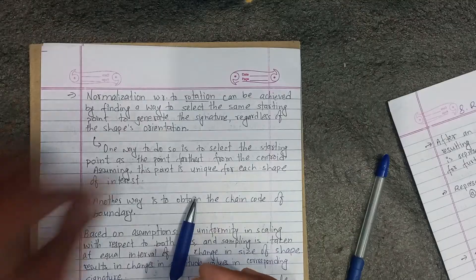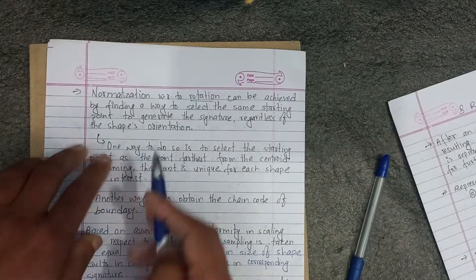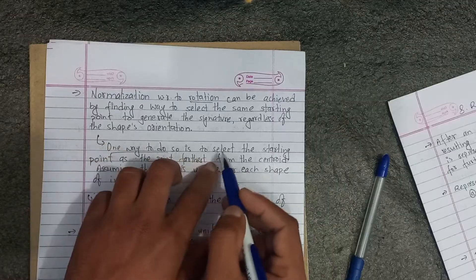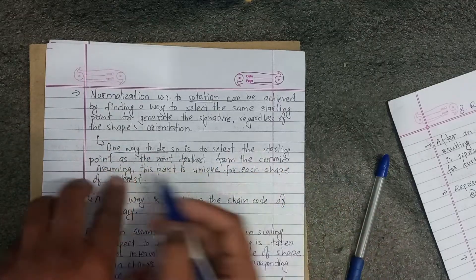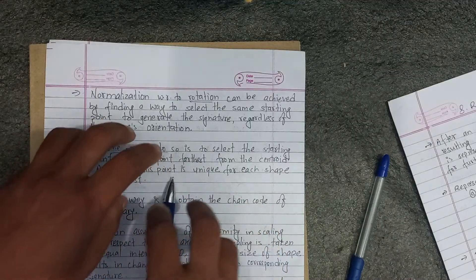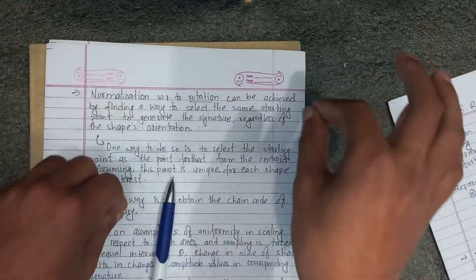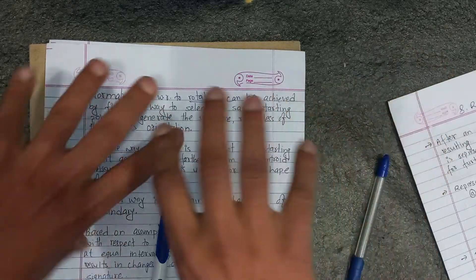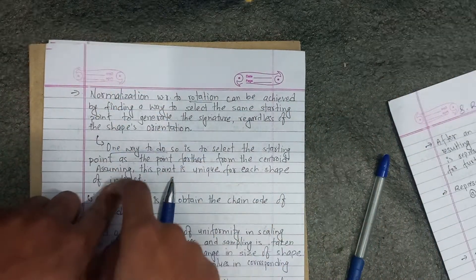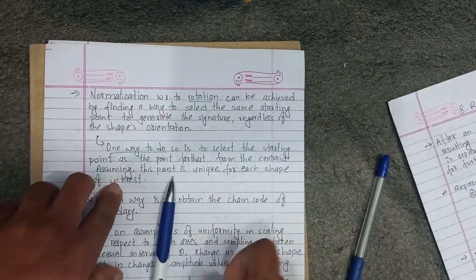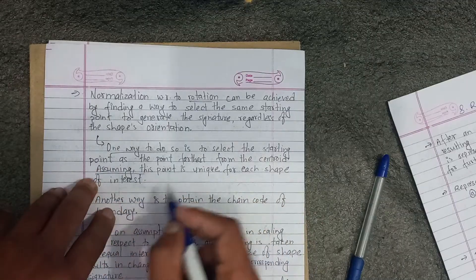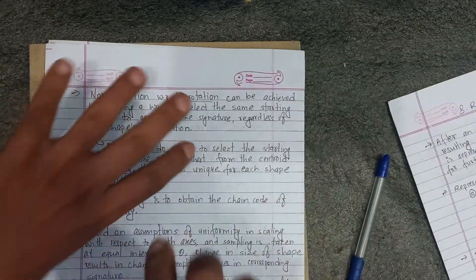One way to do so is to select the starting point as the point farthest from the centroid, assuming that this point is unique for each shape of interest.